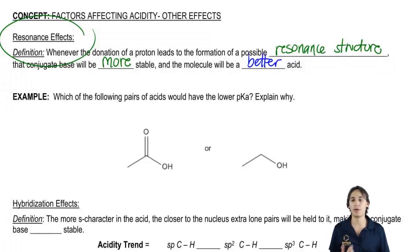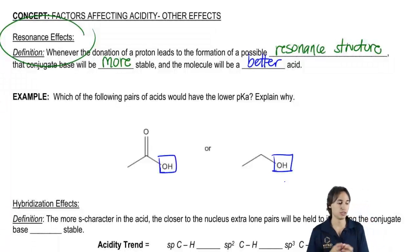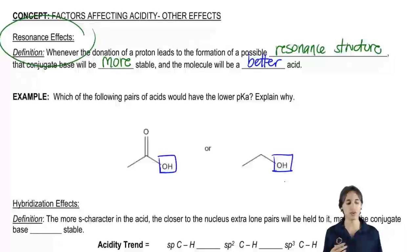So check this out. For this example, I've given you two OH bonds. We're not going to use pKa's to figure this out. It says which of the following pairs of acids would have the lower, but I'm not asking you to remember it. Even though you should remember it, I just want to use the factors affecting acidity to figure this out.